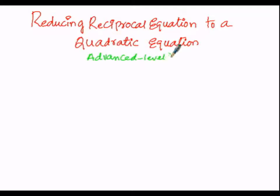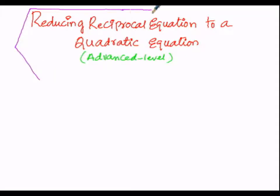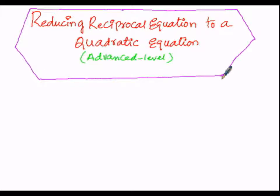First of all, let us write the general form of a reciprocal equation. The general form of a reciprocal equation is: ax⁴ + bx³ + cx² + bx + a = 0.